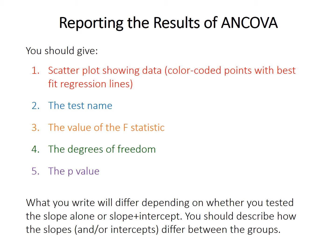Because ANCOVA, ANOVA, and linear regression are all cases of the general linear model, you'll end up with an F statistic. To report your results, provide a scatter plot with color-coded points or different symbols for each group, and different regression lines per group to show how slopes and intercepts may differ. Report the test name, the F statistic, the two degrees of freedom, and the p-value. If you tested two models — one for slope, then one for intercept — report the F statistic, degrees of freedom, and p-value for each.